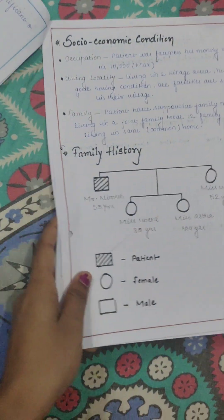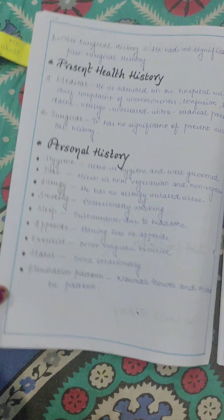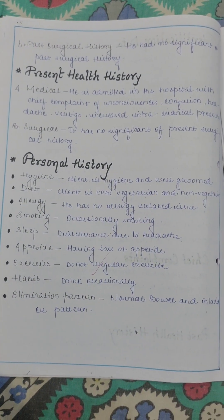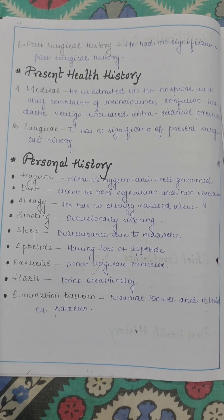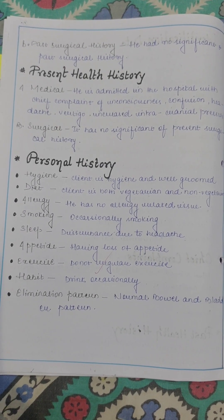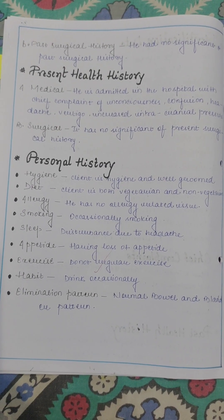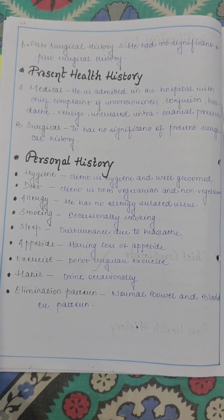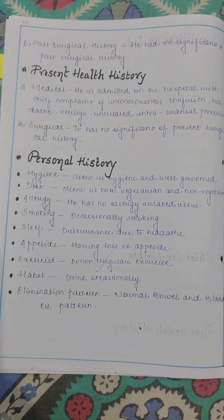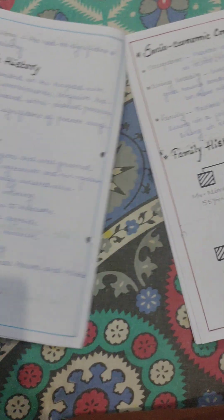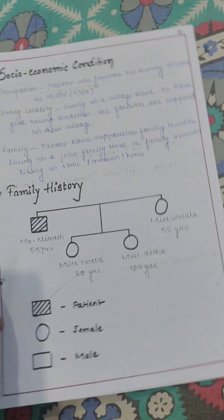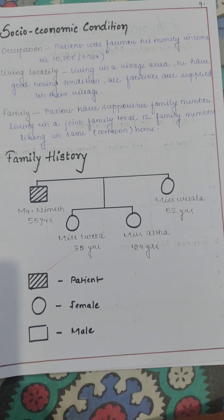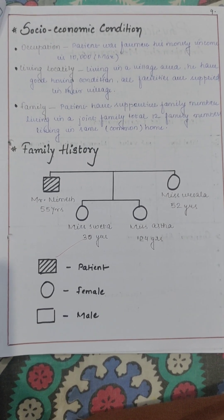You have to write the present health history including medical and surgical history. After that, write personal history, which includes all the basic data like sleeping pattern, appetite, hygiene, diet, etc.